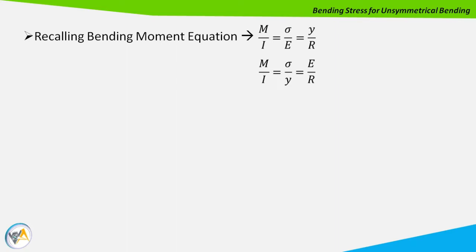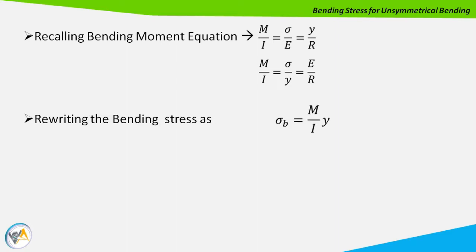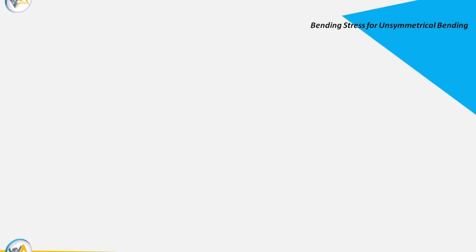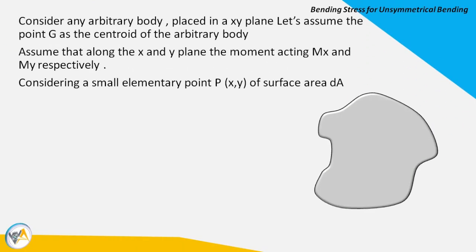We can rewrite the bending moment equation as M/I = σ/y = E/R. In this derivation, our main focus is on stress, so we can write the bending stress as σb = (M/I) × y.